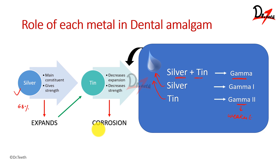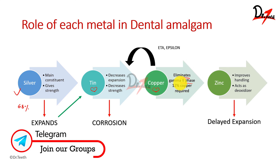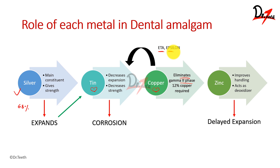To deal with the gamma-2 problem, we add copper. Tin has a strong affinity for copper, so in the presence of copper, tin reacts with copper instead of mercury. This eliminates the gamma-2 phase and forms the eta phase or epsilon phase, also called the copper-tin phase. For this to happen, we need around 12 percent copper — that is why high copper amalgam is recommended. Zinc is also added because it improves handling and acts as a deoxidizer.